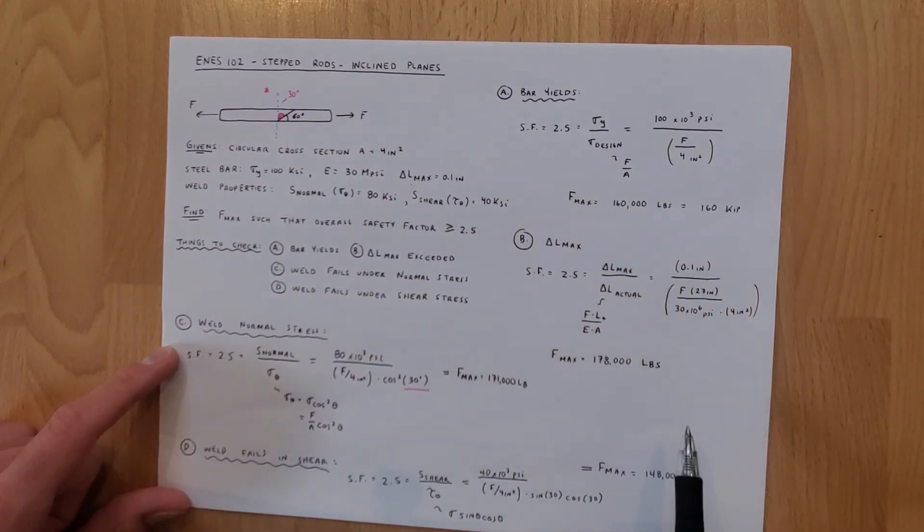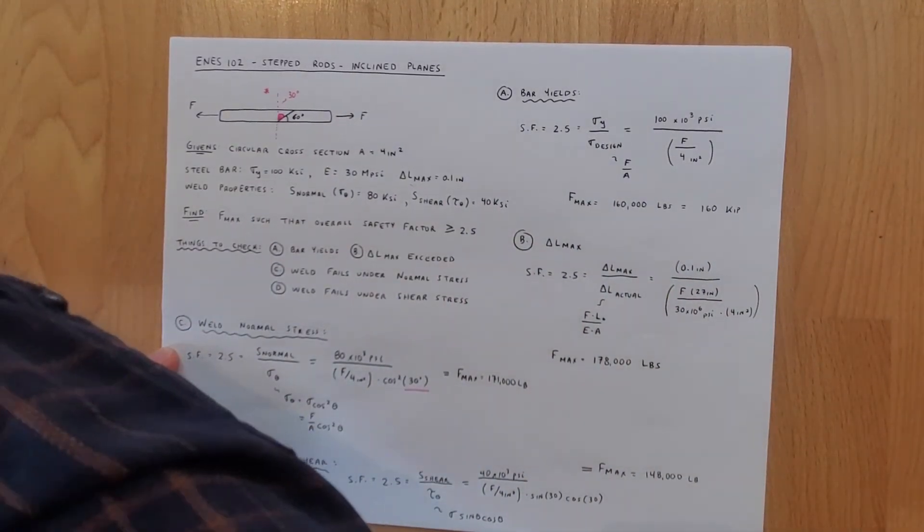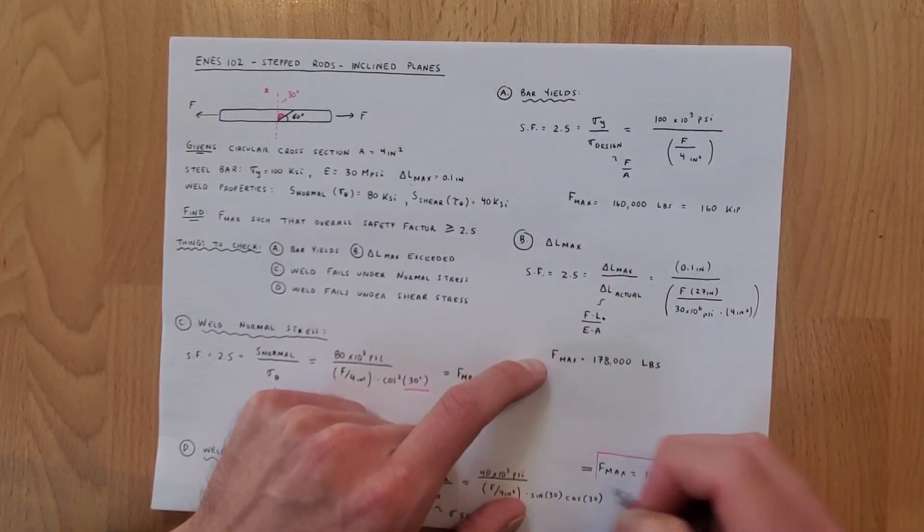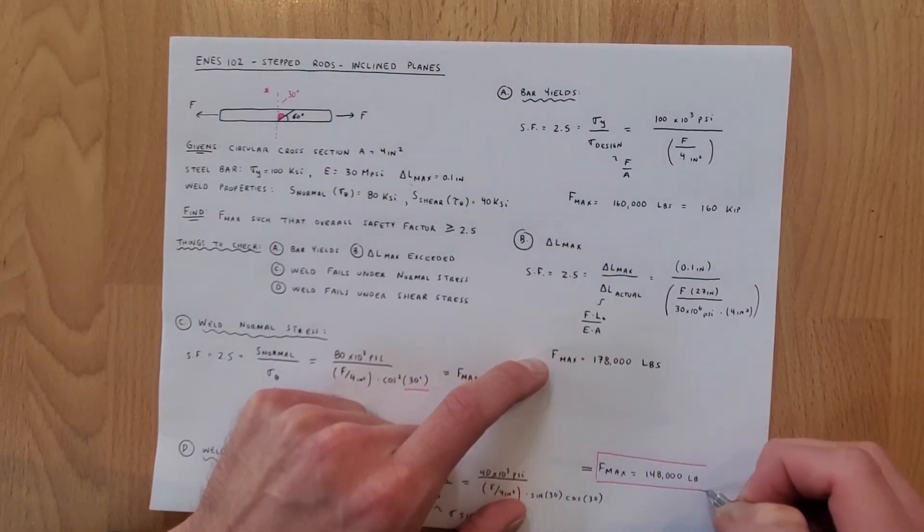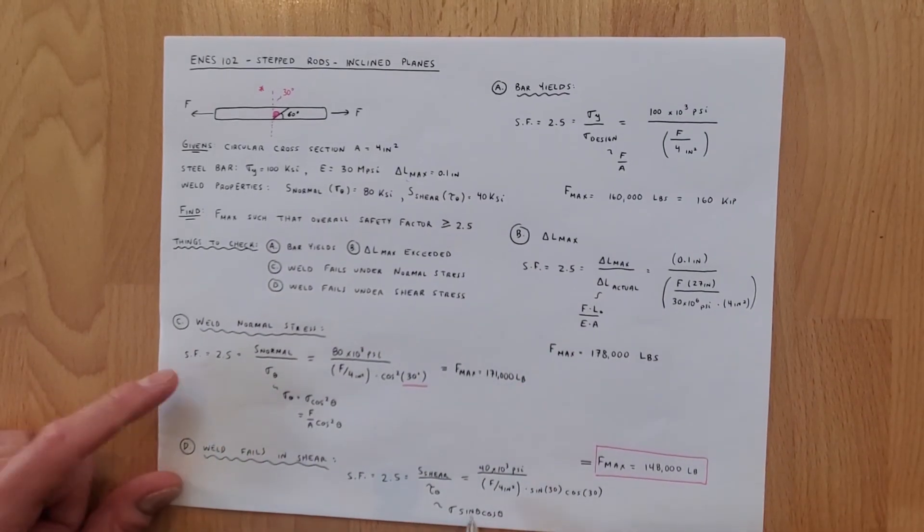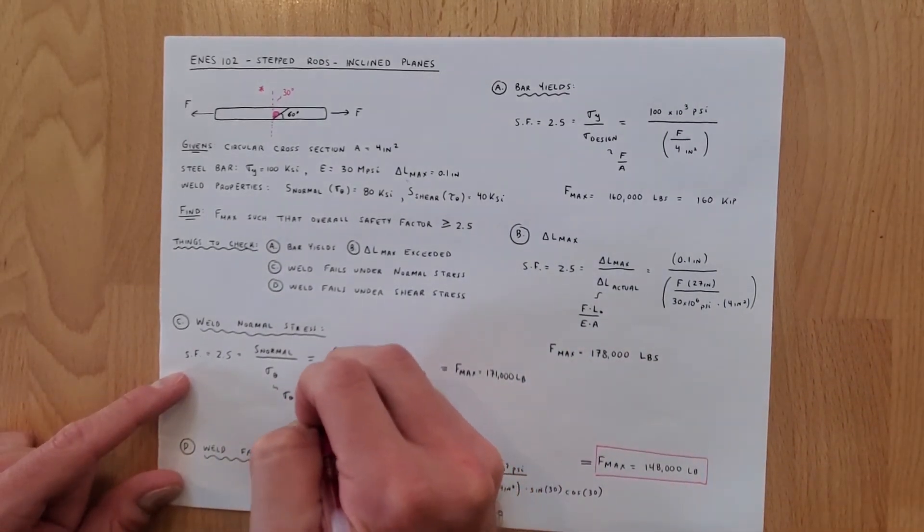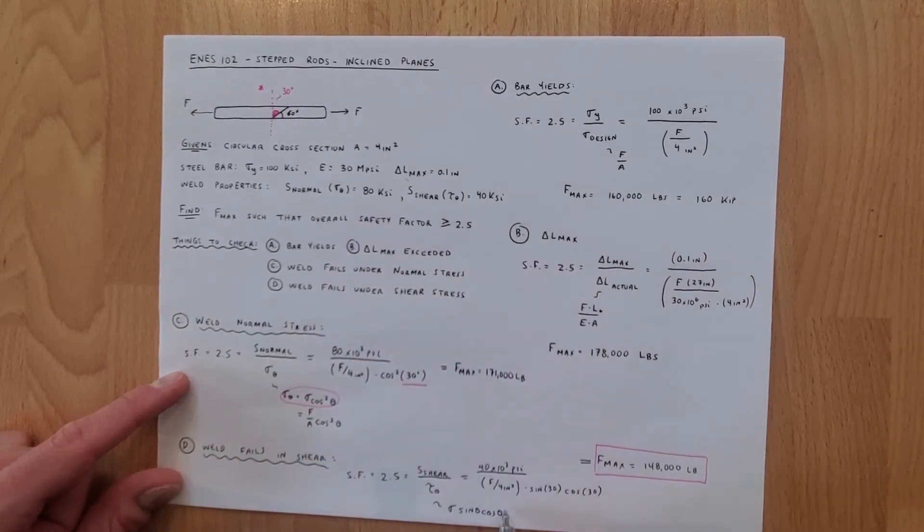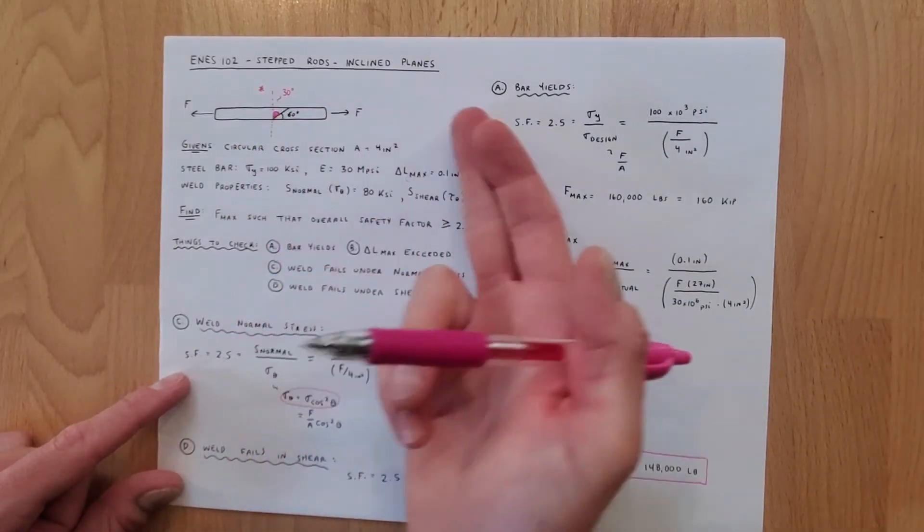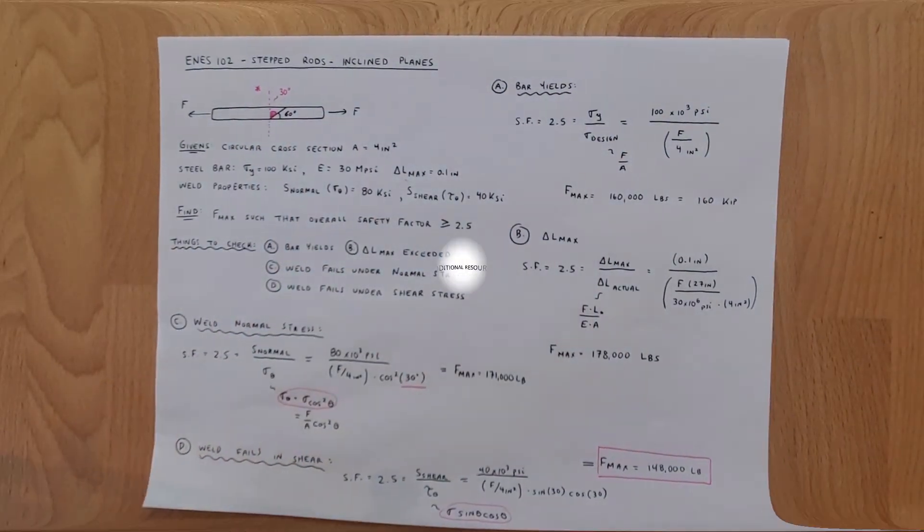And what we find here is that f max is equal to 148,000 pounds. As a result this force right here is the smallest of all the forces we've calculated so the force that allows every criteria to be satisfied is this force right here. This is our final answer and that is how we apply equations for normal stress of the weld and shear stress along the weld to solve an inclined step rod problem.